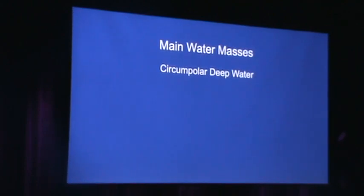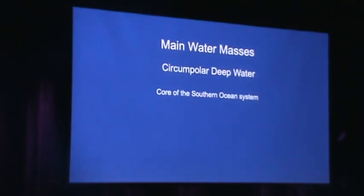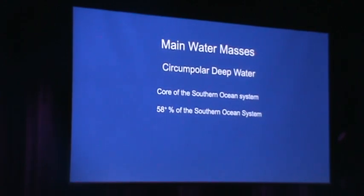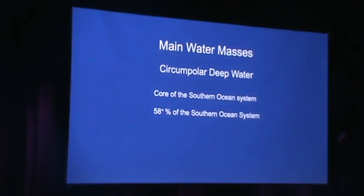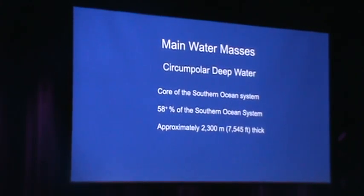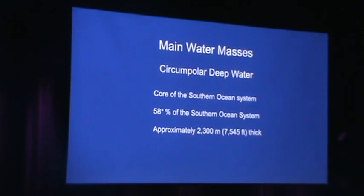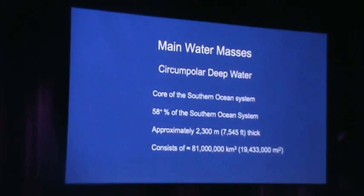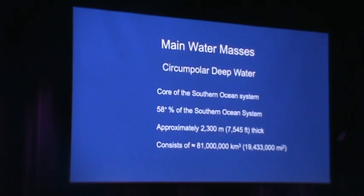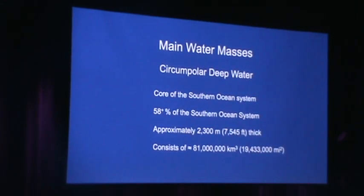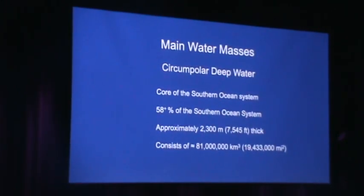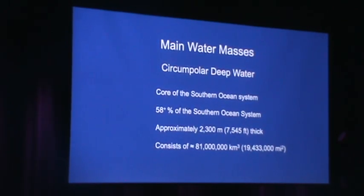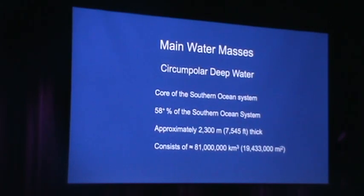The circumpolar deep water is the core of the Southern Ocean — it makes up most of the water volume, coming to almost 60% of the total ocean waters in the Southern Ocean system. It's approximately 2,300 meters, or about 7,500 feet, in thickness — a massive body of water consisting of about 81 million cubic kilometers of water, mostly moving clockwise around the continent.